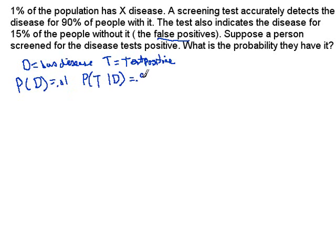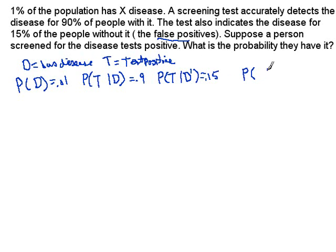in 90% of those cases. And the false positive condition is also a conditional probability — it's looking at the case where people do not have the disease, and yet the test will be positive in 15% of those cases. The question we're interested in is: if the test is positive, what's the probability that a person actually has the disease? In other words, we're interested in this conditional probability P(D|T). Let's look at the various cases.